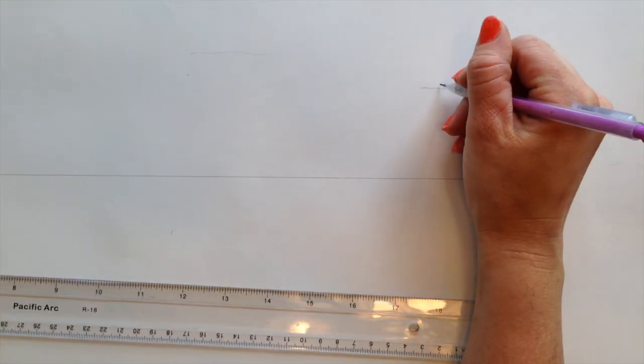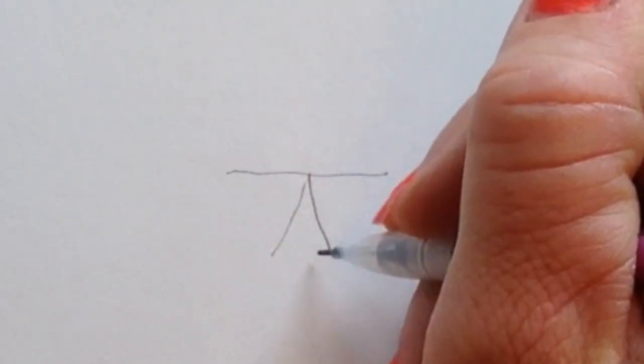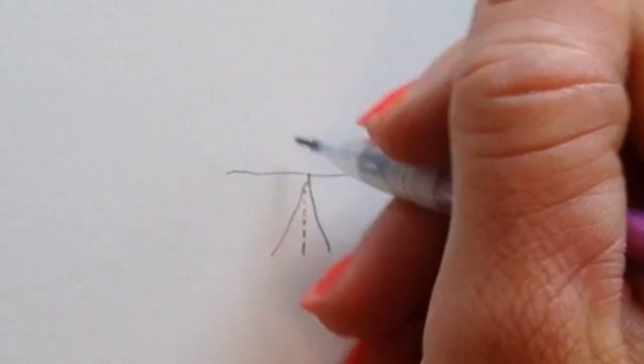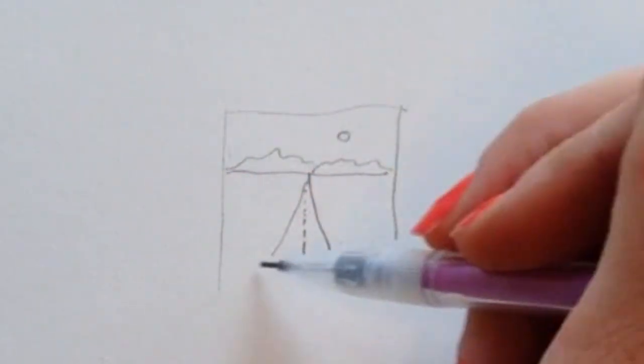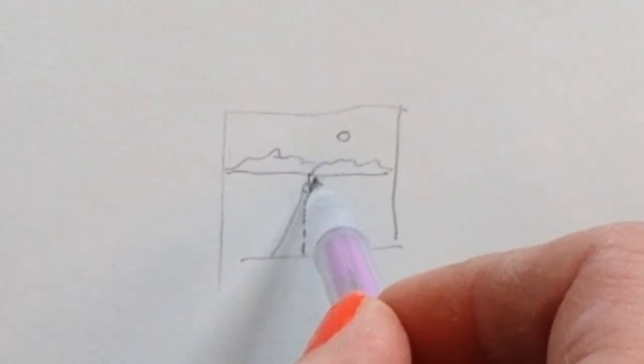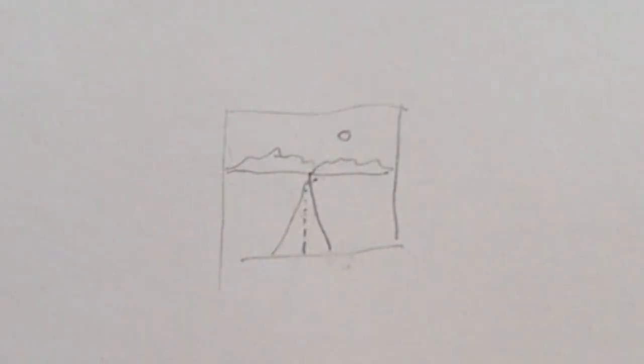For example, if this was our horizon line, this would be a road. Here's the road getting smaller as it goes to. Here's some mountains and the sun, right? It's all coming to this one point, which is why this is one point perspective.